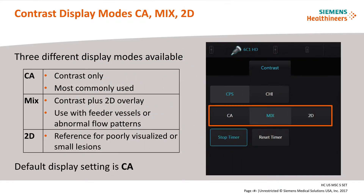Once the imaging mode has been decided, the next parameter to select is how the user will view the image on the screen. There are three types of display modes available in the contrast settings. CA, which is contrast only, is the most commonly used display mode. Mix is a combination image display mode with a 2D overlay of the tissue signal over the black contrast-only image, commonly used to visualize feeder vessels or abnormal flow patterns. The third display mode is 2D, which shows only the 2D image. The default setting on the system is set to CA and is not customizable.